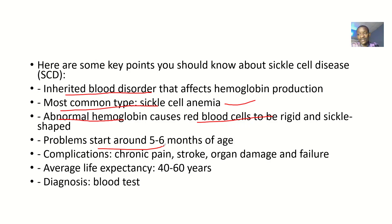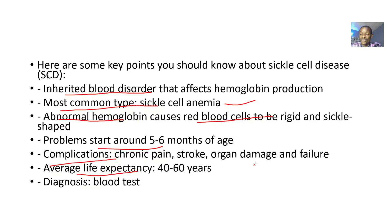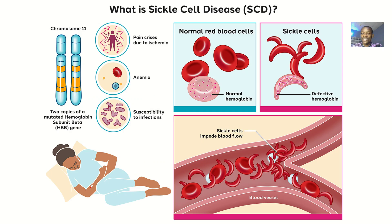The problems start around five to six months of age because it's inherited, so it shows up when you are just a child. Complications include chronic pain, stroke, organ damage, and organ failure. The average life expectancy is 40 to 60 years — most people with this condition don't live much beyond that. To diagnose this blood disorder, the best approach is a blood test to examine the hemoglobin and the shape of the blood cells.